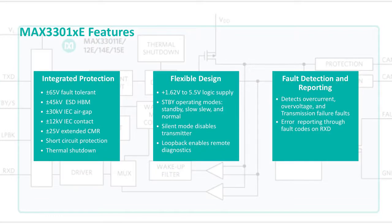Once these faults occur, it takes considerable time to debug and troubleshoot. Maxim has recently introduced a CAN transceiver, MAX33012E, which incorporates a fault detection feature that monitors CAN H and CAN L for system faults such as transmission failure, overcurrent failure and overvoltage failure, and reports the error code to the controller. The error code provides valuable diagnostic information which helps to debug the fault quickly and reduce equipment downtime.